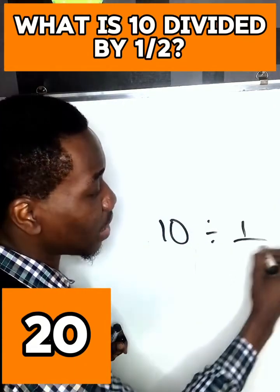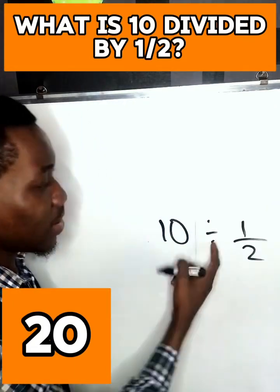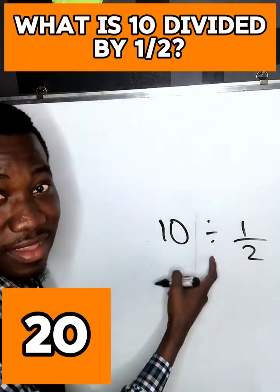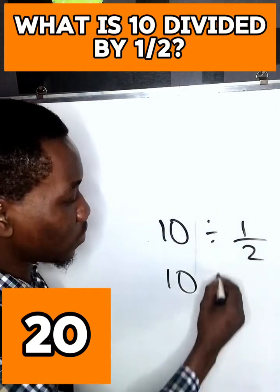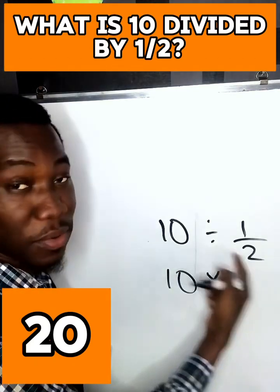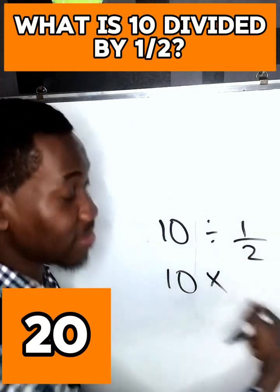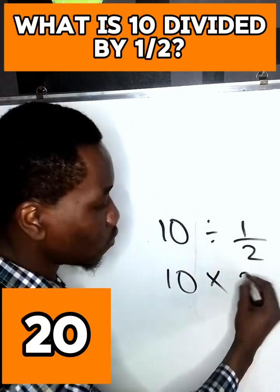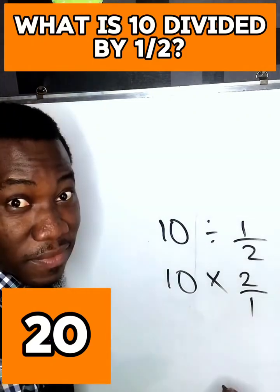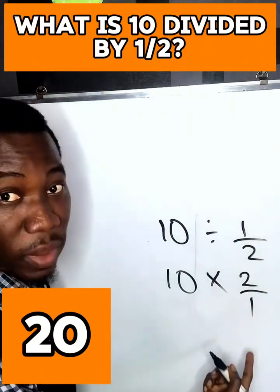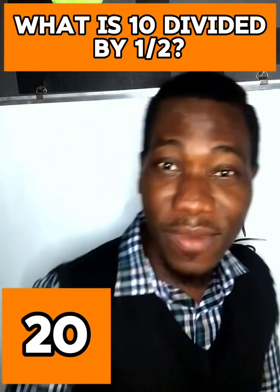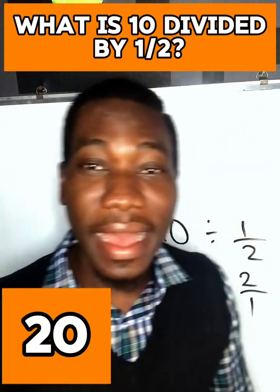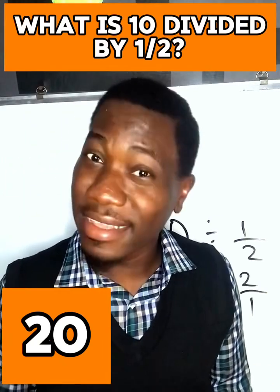To solve it mathematically: 10 divided by one-half — we change the division to multiplication using the reciprocal, so it becomes 10 times 2 over 1. That gives us 20 divided by 1, which is 20. So 10 divided by one-half equals 20, not 5.